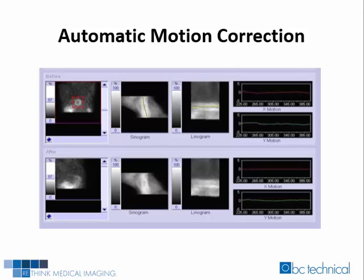This motion correction program will correct up to 5 pixels of motion, which is 6.6 mm times 5, equaling 33 mm, or around 1.5 inches.